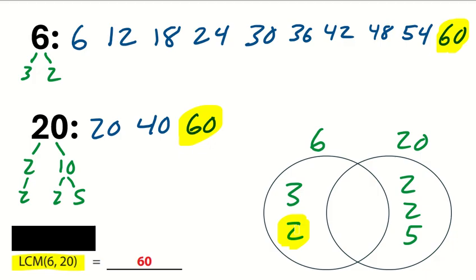Now, you probably noticed that we have some factors in common. So we can go ahead and erase those two and put them in the middle, represented by the 1, 2. Now, we should be able to multiply these together and get a least common multiple of 60. Let's try it. 3 times 2 is 6. 6 times 2 is 12. And 12 times 5 is, in fact, 60.